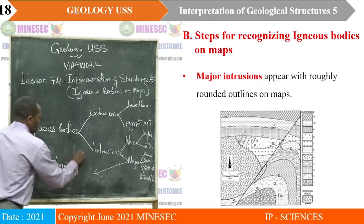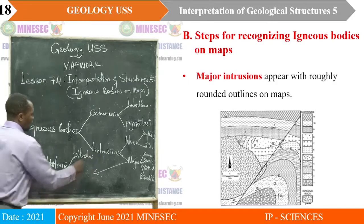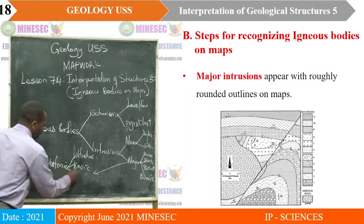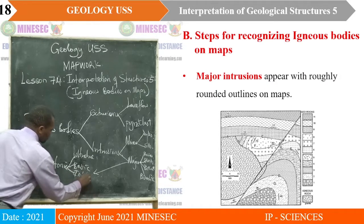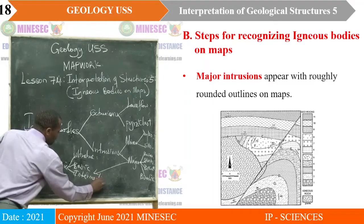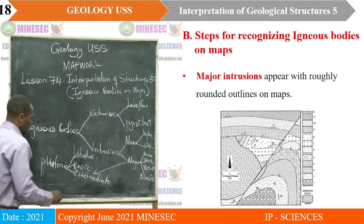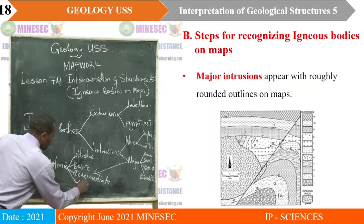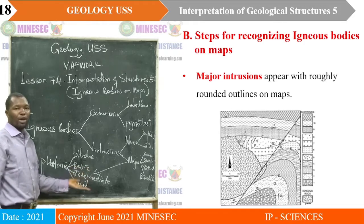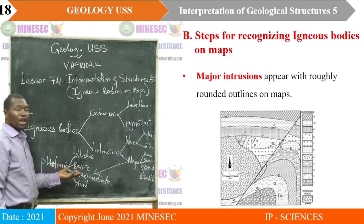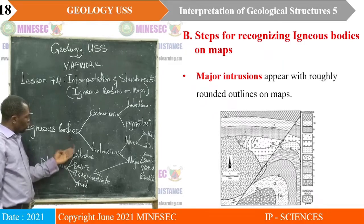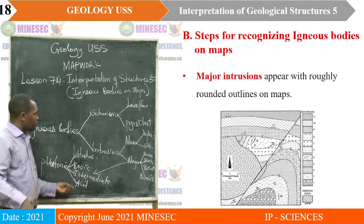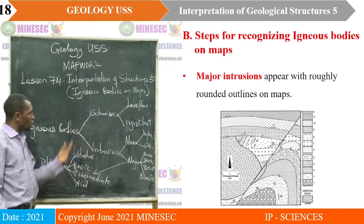For plutonic rocks, we note that ultra-basic corresponds to peridotite; basic corresponds to gabbro; intermediate corresponds to diorite and syenite; and acid corresponds to granite and pegmatite. When you see these rock names on a map, they represent major intrusions.